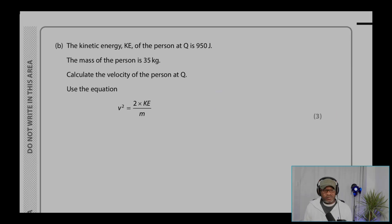Question 2b. The kinetic energy Ke of the person at Q is 950 joules. The mass of the person is 35 kilogram. Calculate the velocity of the person at Q. Use the equation: V squared equals 2 times Ke, that's the kinetic energy, which is 950 divided by the mass M, which is 35 kilogram.